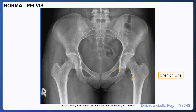Shenton's line is an imaginary line that goes along the medial border of the neck of the femur and then along the inferior border of the superior pubic ramus. This line should be smooth and any disruption may be suggestive of a fracture.